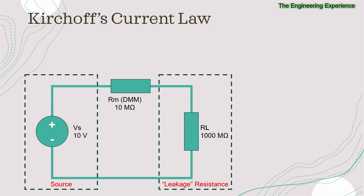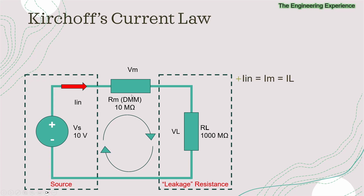Using Kirchhoff's current law, we know that the current going through here is the same across all components — the current in the loop is the same. We can say IN, and giving these components a label: the voltage across the multimeter or DMM, I'm going to call RM, and the voltage across the leakage resistance, I'm going to call VL. So IN equals the current through the meter IM, and the current through RL is also the same, IL. So IL equals IM, which also equals IL, due to Kirchhoff's current law.